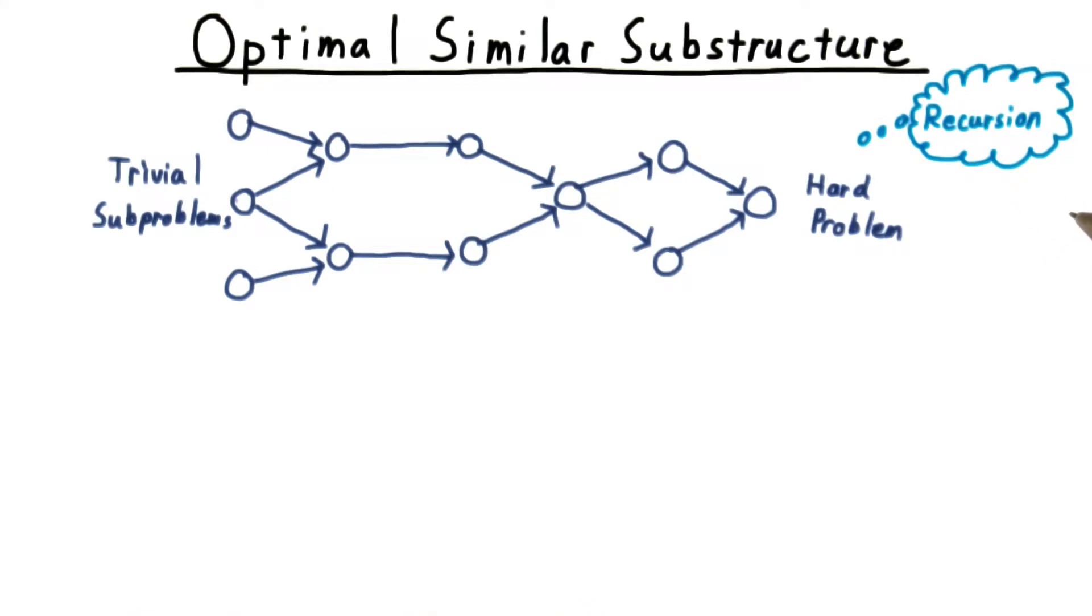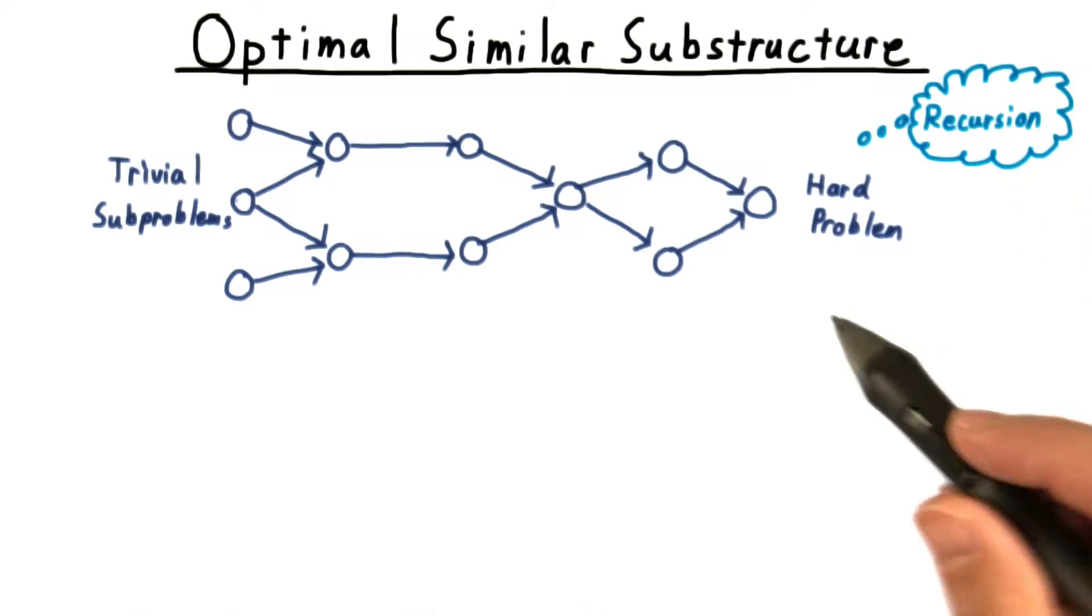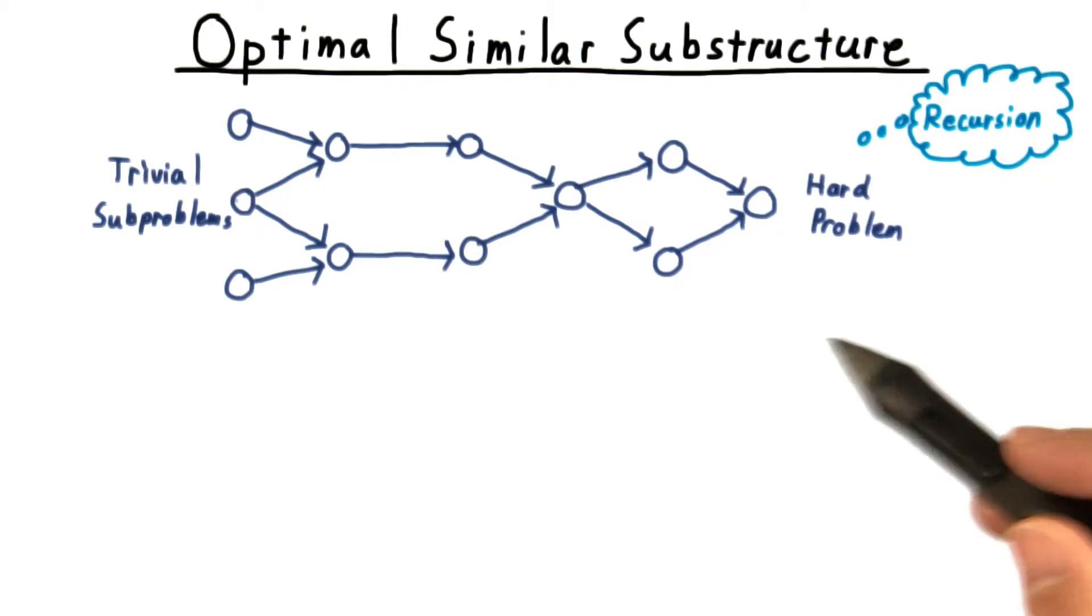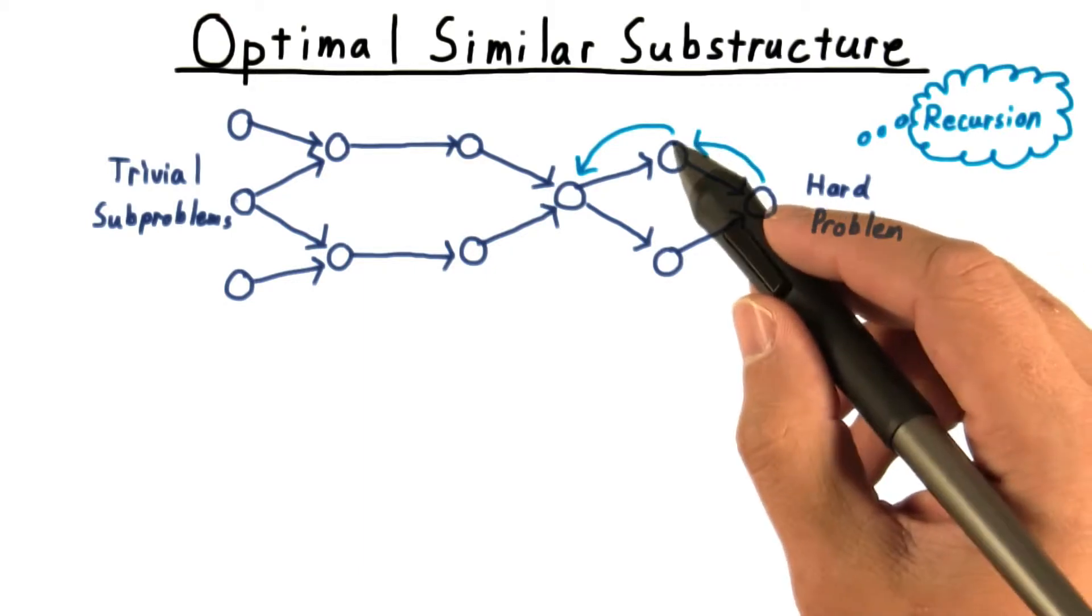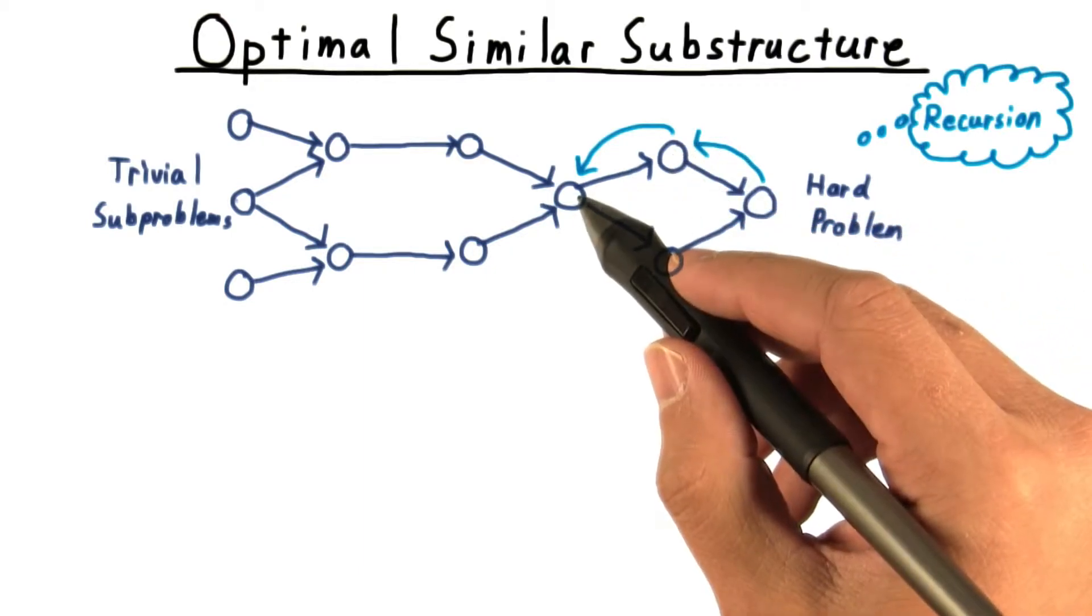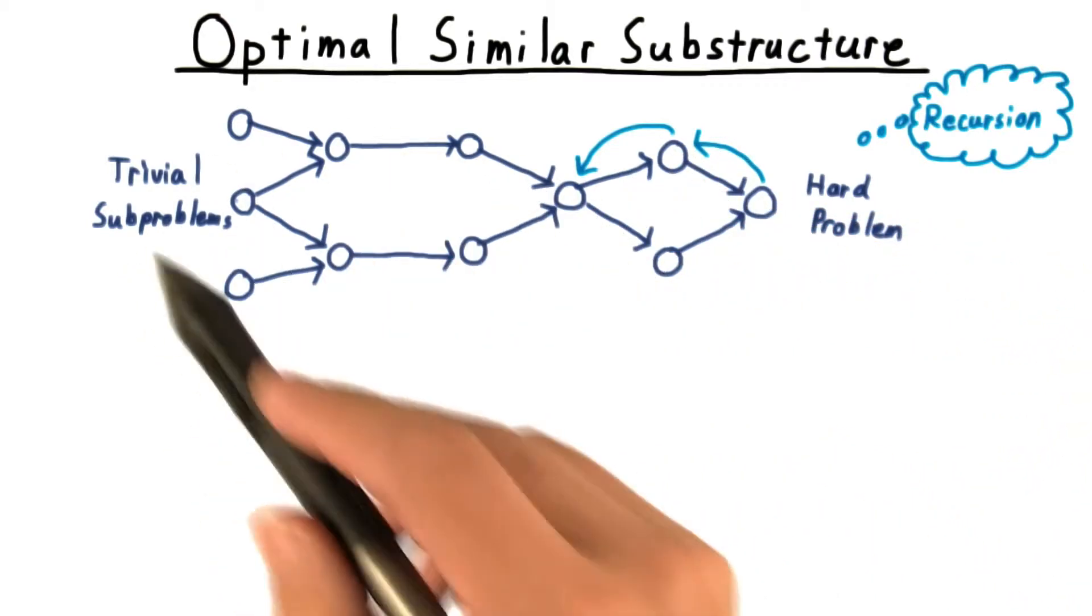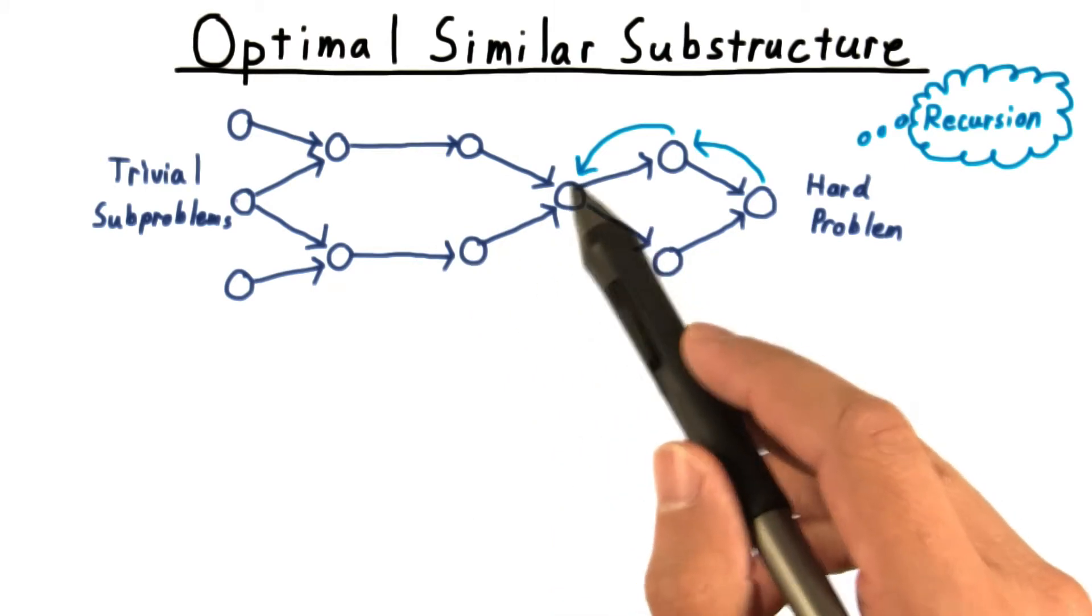At first, this feels like an ideal case for recursion. Since those subproblems are similar, perhaps we can use the same code and just change the parameters. Starting from this hard problem, we could recurse back to this one, and then to this one, and so forth, using this whole subgraph here to solve this subproblem.